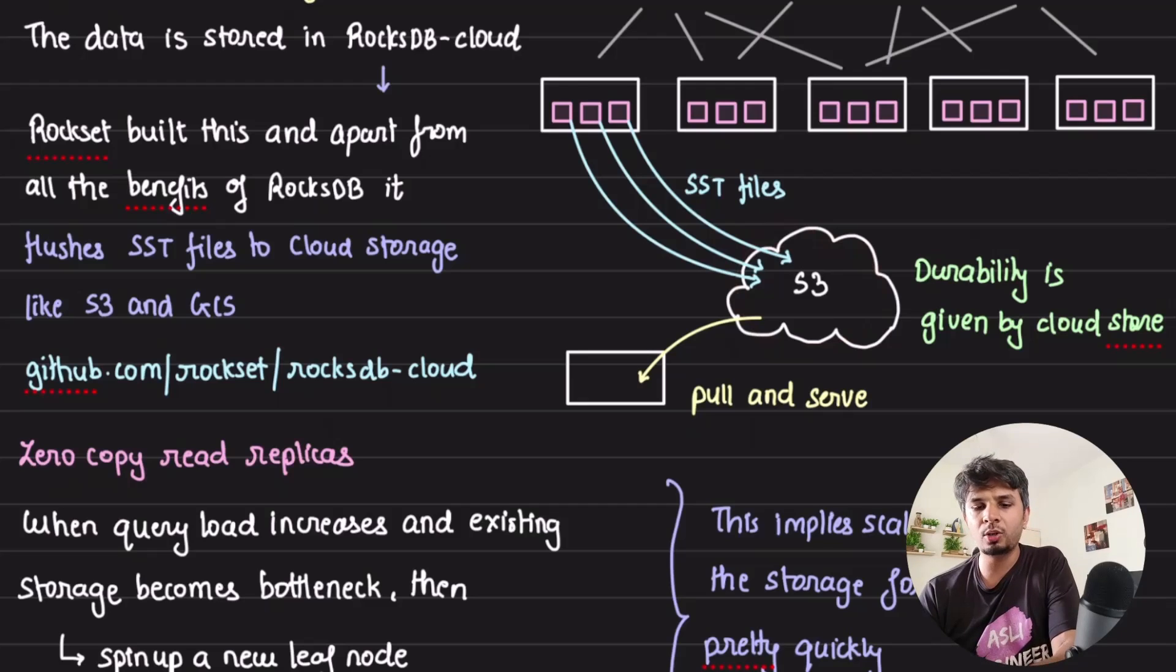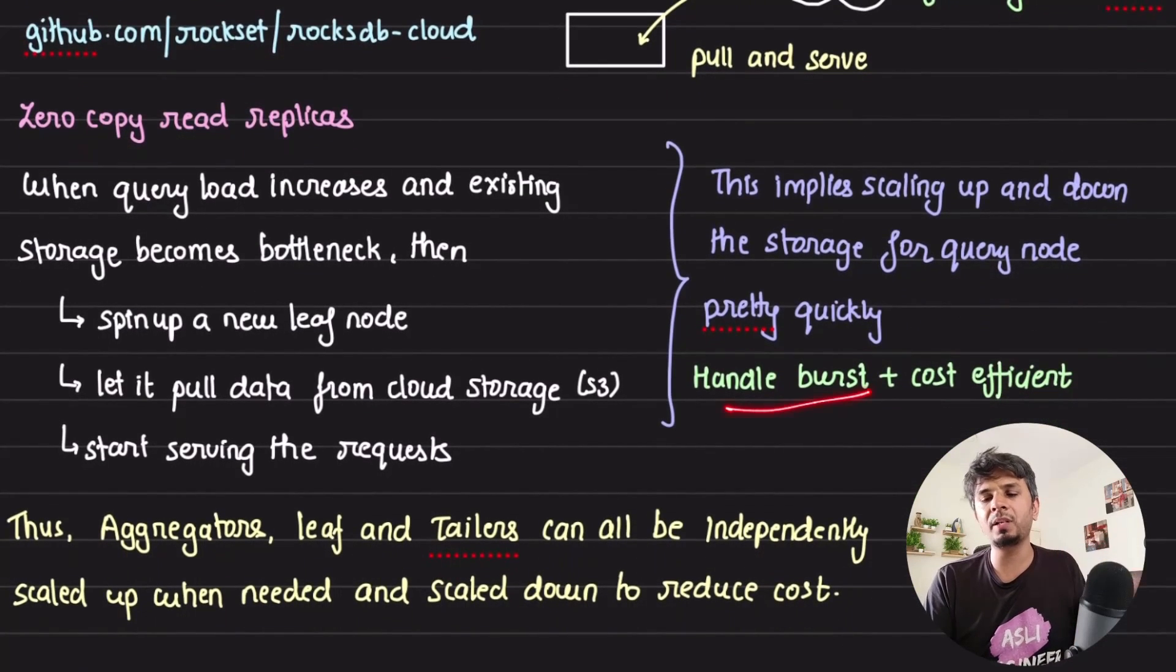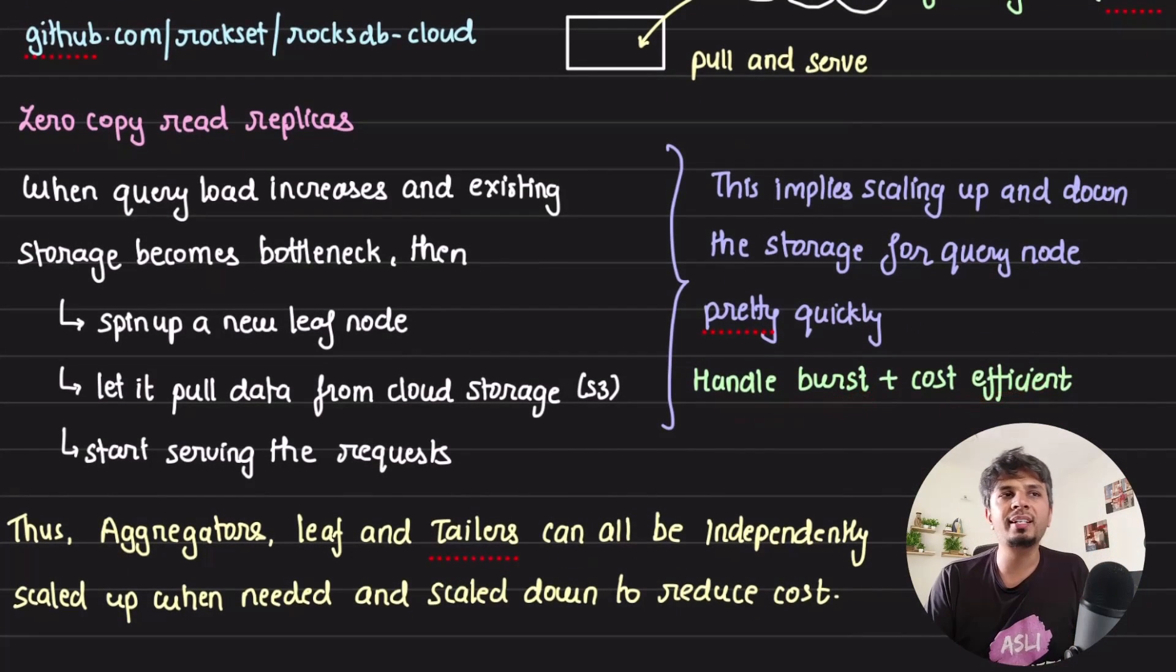Because your data is durably stored on S3, if you see that there is not much query happening for a certain set of SST files, you can chop off those nodes if you want. This way you get the scaling - you can horizontally scale out and you can reduce the number of machines that you want pretty quickly. It gives you an ability to handle the burst and be cost efficient at the same time.